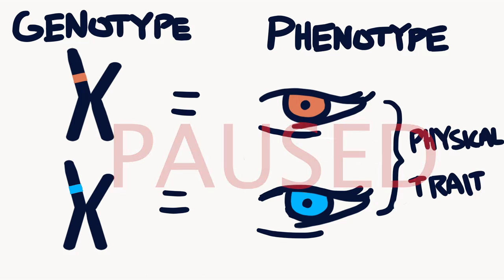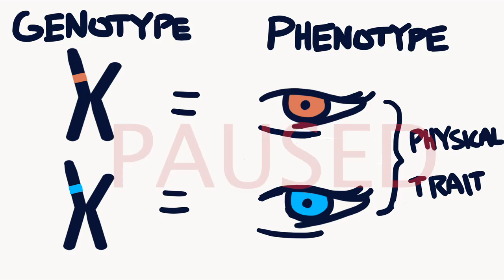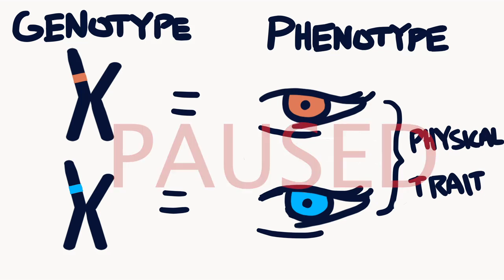For clarification, penetrance is also defined as the proportion of individuals carrying a specific variant that express the trait associated with that variant. This proportion is also what creates the probability I explained, and it's simpler to think of it in terms of probability.